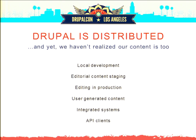Another problem is that Drupal is distributed, but we haven't realized that our content is also distributed. Content might be coming from local development if you're preparing a campaign, from an editorial staging environment, it might be user-generated content in production. We might integrate with other systems where we pull in content, and there might be API clients pushing content. So our content is distributed, coming from everywhere — and we don't necessarily consider that in core.